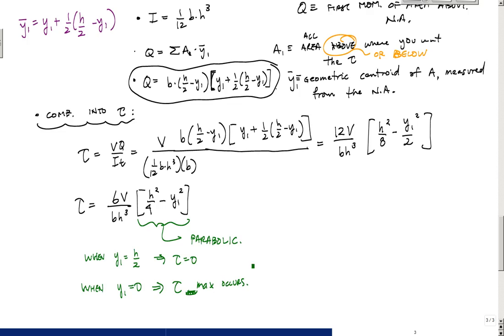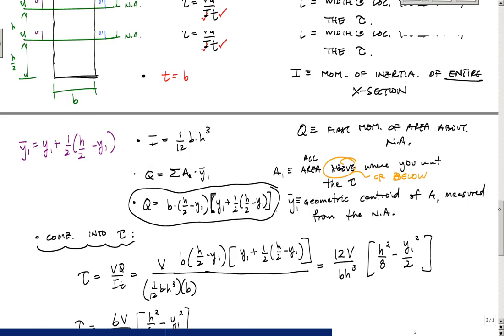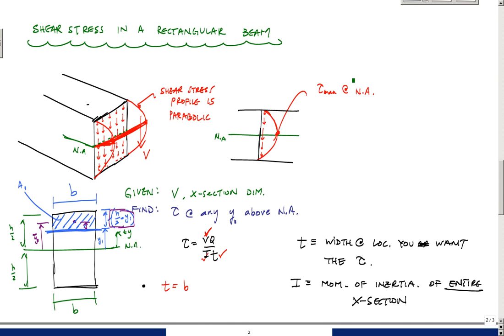You can also prove this by taking the derivative, d tau over dy1, and then setting it equal to 0 and solving for y1. You'll end up with y1 equals 0. These are the things, and this is just proof that this parabolic distribution that we had over here is good. The max always occurs at the neutral axis. And that's one thing you can always kind of, at least as long as you have linear elastic behavior and everything, the max occurs at the neutral axis and the edges have 0 shear stress.